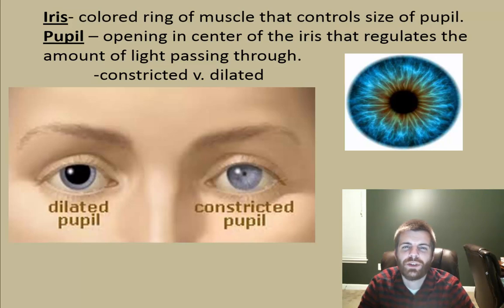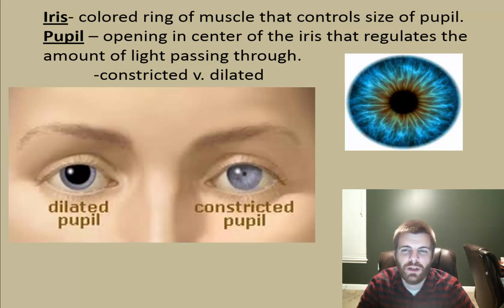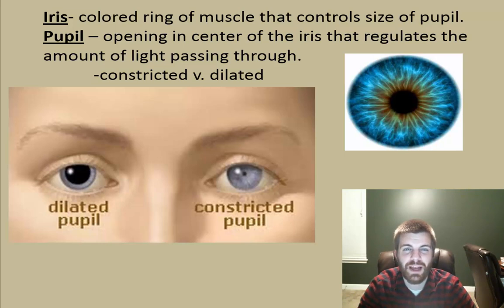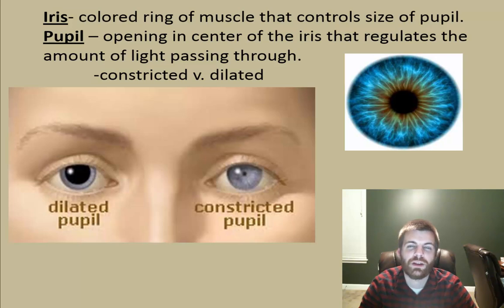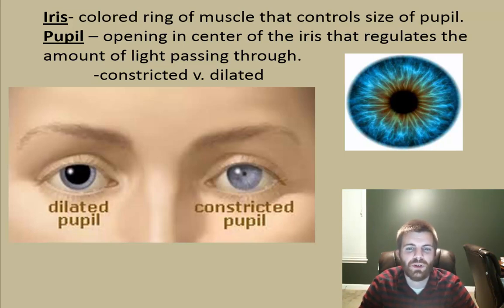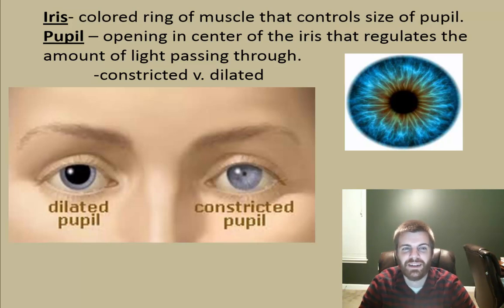Within the eye you have two components: the iris and the pupil, although the pupil is kind of like an absence of something. The iris is the colored ring of muscle that controls the size of your pupil — you may have a dilated pupil or a constricted pupil. The pupil is really an opening in your eye that regulates the amount of light that goes through it. If the pupil is constricted, the hole is very small; if the muscles of the iris are more relaxed, the pupil is dilated and the opening is larger.